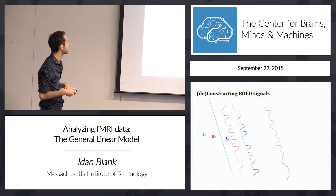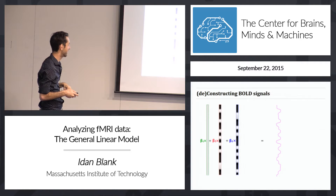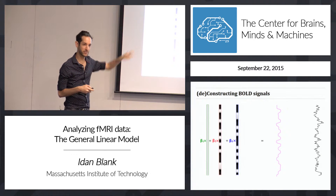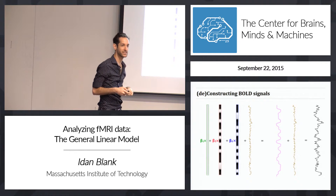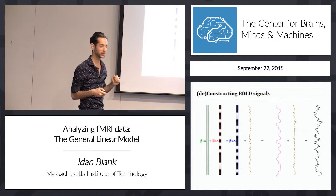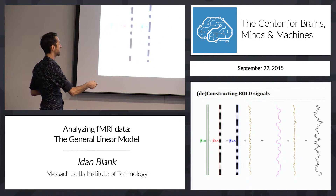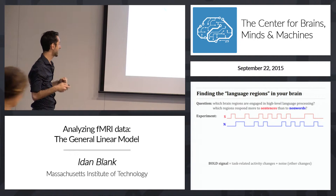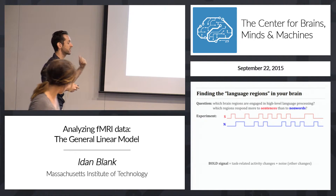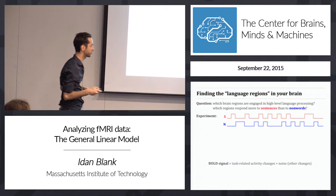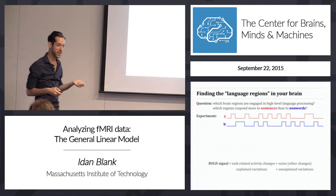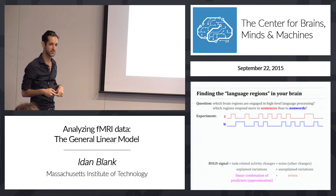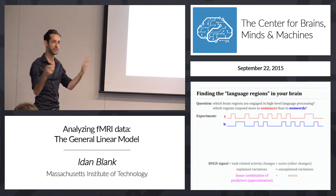Let's look at this again — we know these are vectors. Adding the errors: this is the true signal, and the approximation is not exactly the true signal. To get the true signal, we need to add the errors. A prediction plus the errors equals the true signal. So, to recap: the BOLD signal consists of task-related activity changes and changes we cannot explain — some noise — that is, explained variations plus unexplained variations. The explained variation is a linear combination of predictors — the best approximation we can make — plus the errors, whatever we couldn't predict.